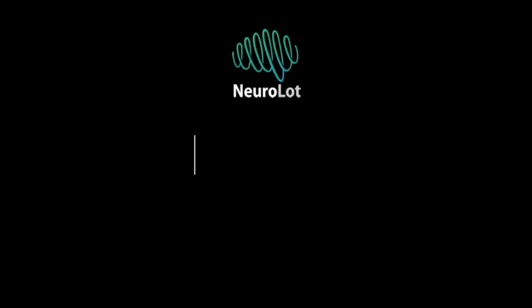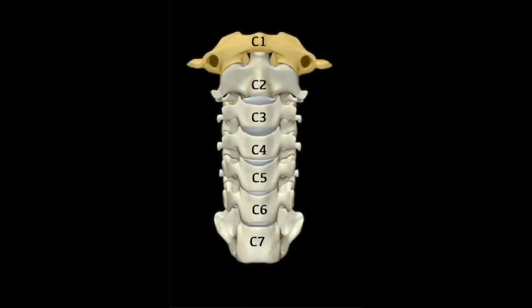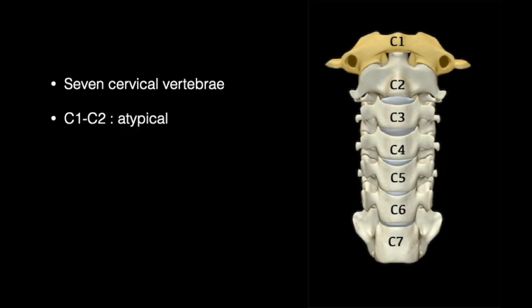Salam, this is Khalid Faris Al-Ali. This video is a part of the spine surgical anatomy series and we're talking about C1 surgical anatomy. C1, also known as Atlas, is the first cervical vertebra of the C7 vertebrae. It is an atypical vertebra along with C2 and C7.